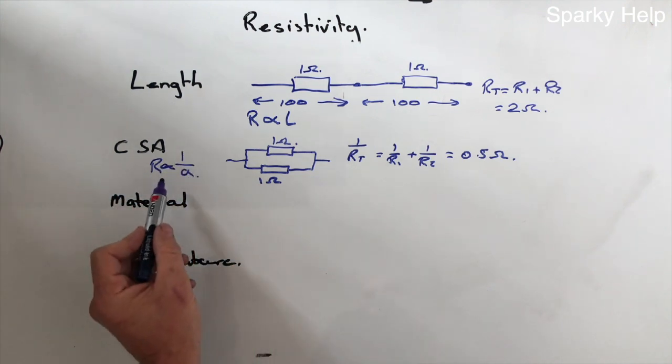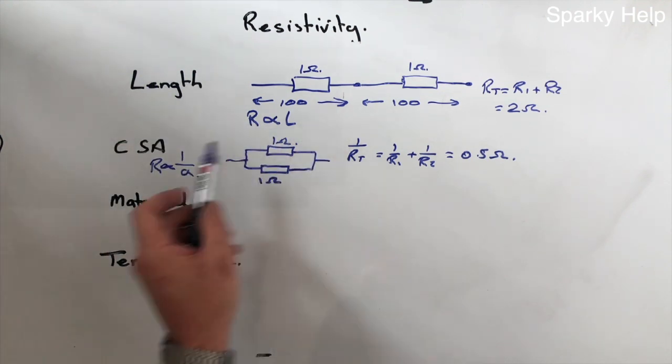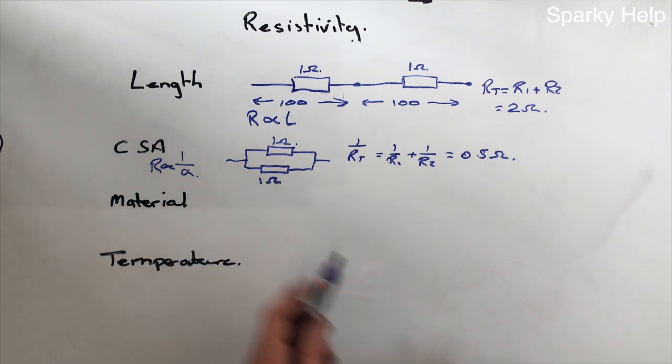It's inversely proportional to it. So resistance in length is proportional to it. CSA is inversely proportional. So as cross-sectional area goes up, resistance will go down.